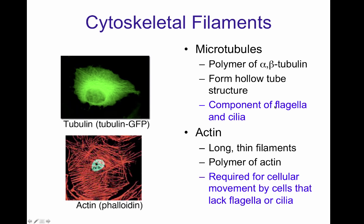The microtubules are polymers of alpha and beta tubulin, forming a hollow tube that elongates from the microtubule organizing center. They are going to be the main components of the flagella and cilia in eukaryotes.